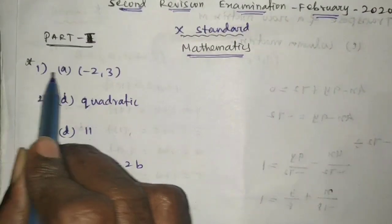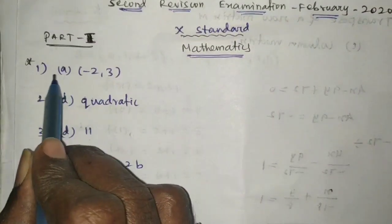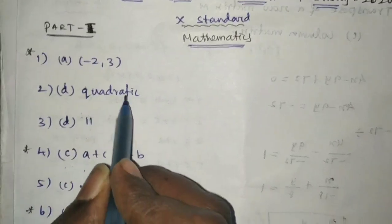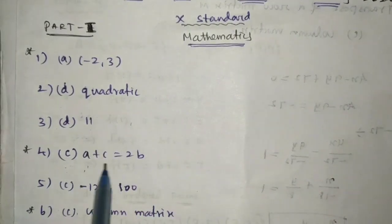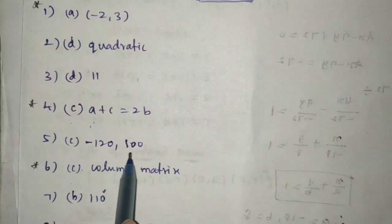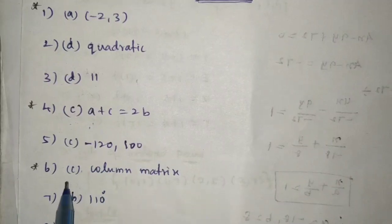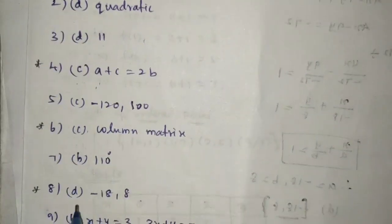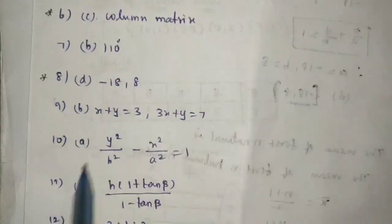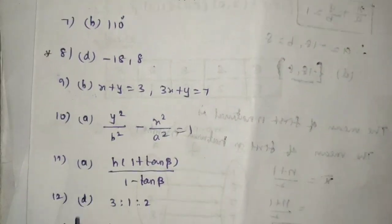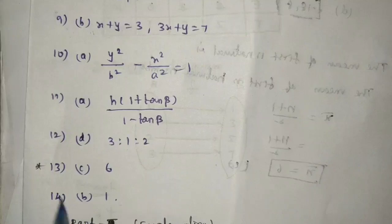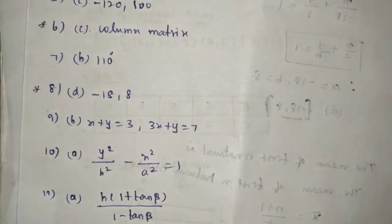Part one answers: Question 1: A (minus 2, 3). Question 2: D. Question 3: D, 11. Question 4: C. Question 5: C (minus 120, 100). Question 6: C. Question 7: B. Question 8: D. Question 9: B. Question 10: A. Question 11: A. Question 12: D. Question 13: C. Question 14: B.